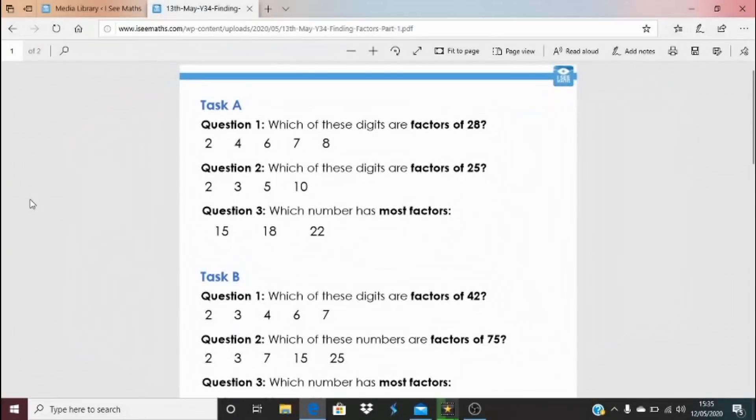So year 3 and 4, here's today's task. Click on the blue link underneath the video. Wherever you're viewing them from, it'll bring this up. We've got task A and task B. So for these questions, for example, question 1, which of these digits here are factors of 28? So circle the ones that are, and again, for factors of 25, and so on, and how do you know? Which of these three numbers has most factors? That's question 3.